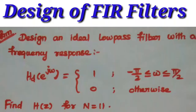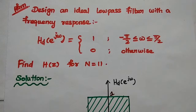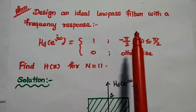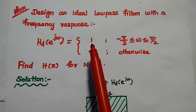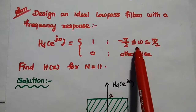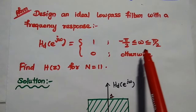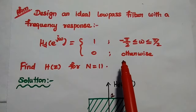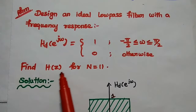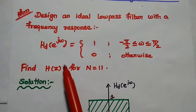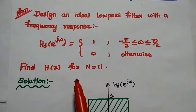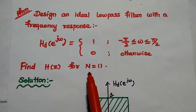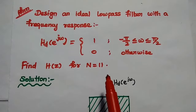Dear students, now we are going to solve an important problem in low-pass FIR filter design using the Fourier series method. Design an ideal low-pass filter with a frequency response Hd(e^jω) equal to 1 for the frequency range from -π/2 to +π/2, and 0 otherwise. Find H(z) for N equal to 11, meaning we are designing an ideal FIR low-pass filter with 11 samples.